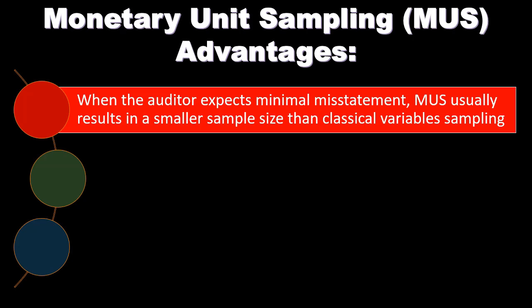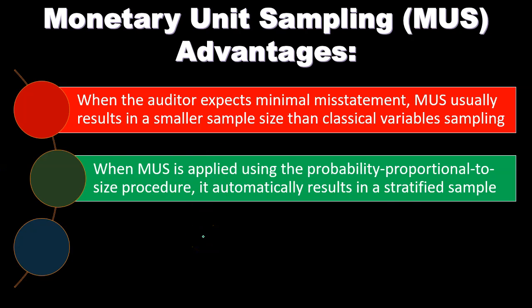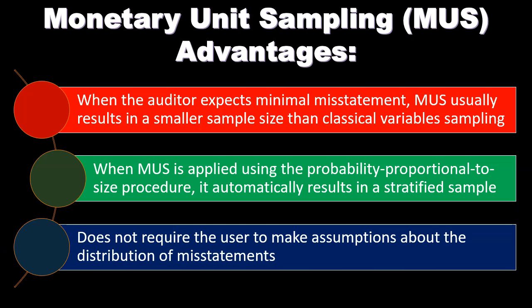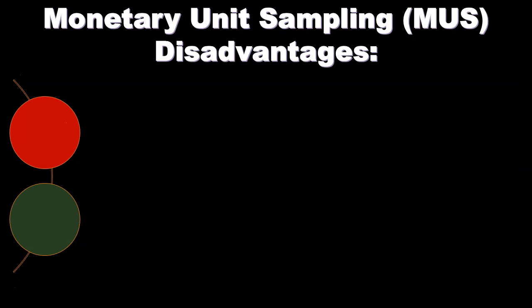Now, the advantages of monetary unit sampling: when the auditor expects minimal misstatement, MUS usually results in a smaller sample size than classical variable sampling. When MUS is applied using the probability proportional to size procedure, it automatically results in a stratified sample. It also does not require the user to make assumptions about the distribution of misstatements, eliminating a source of potential error.